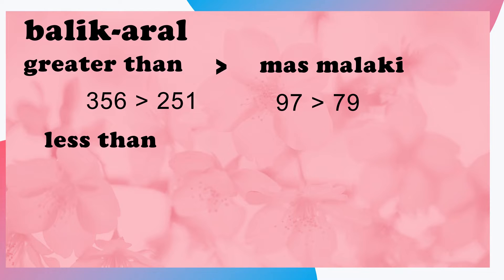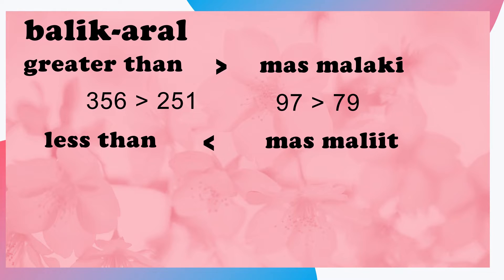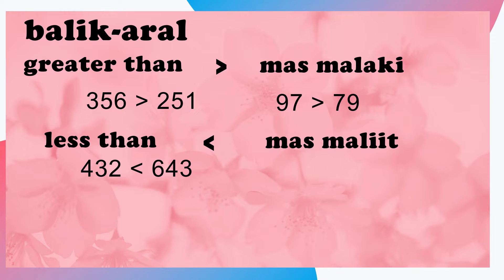Samantalang, ang less than o mas maliit ay ginagamit natin kung ang nasa kaliwang bilang ay mas maliit kaysa sa kanan. Halimbawa, ang apat na araan at tatlong put dalawa ay mas maliit o less than sa anim na araan at apat na put tatlo.